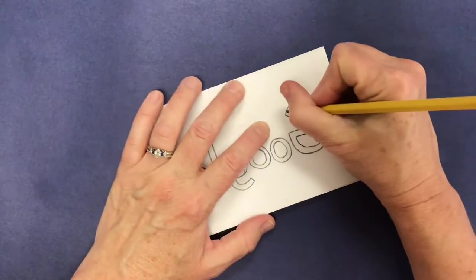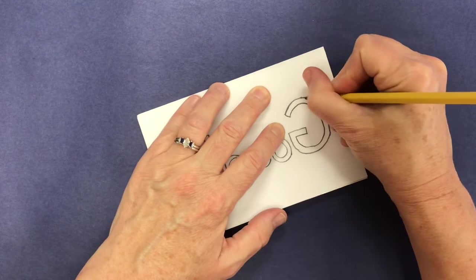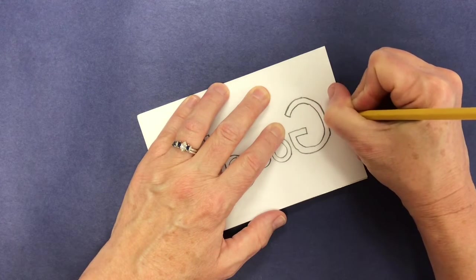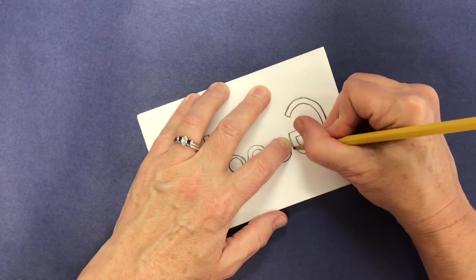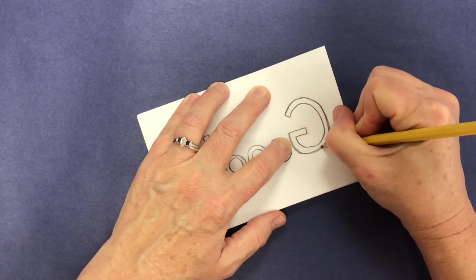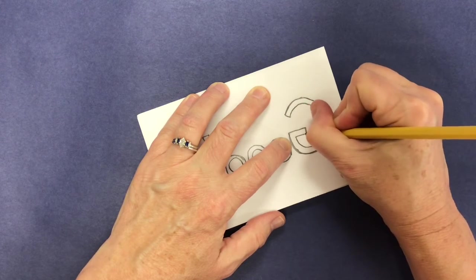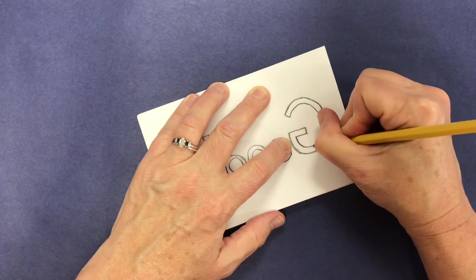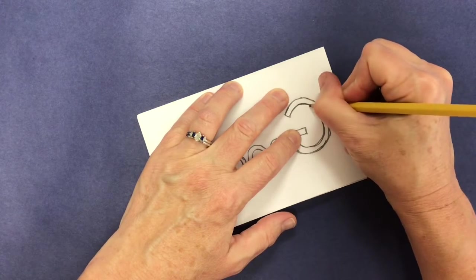And now you're going to trace your design. Now I am tracing quite firmly but I'm making sure I'm not pushing through the paper and I'm just making an indentation into that styrofoam. Later I'll make it a little bit deeper, but right now I'm just tracing very carefully around all of my letters because mine says Google.